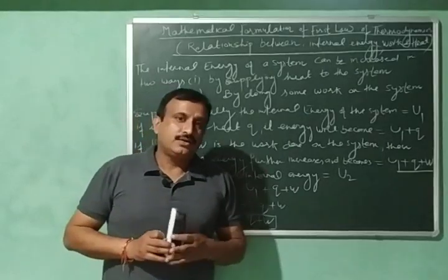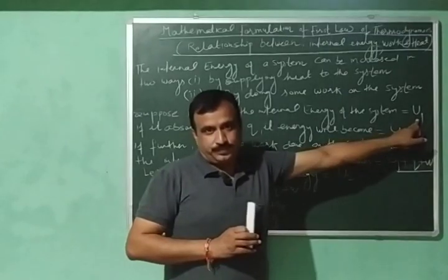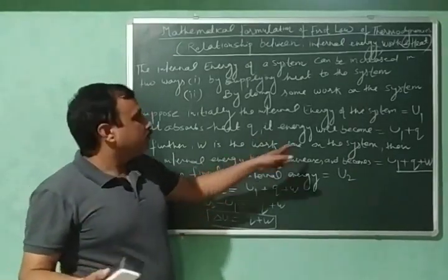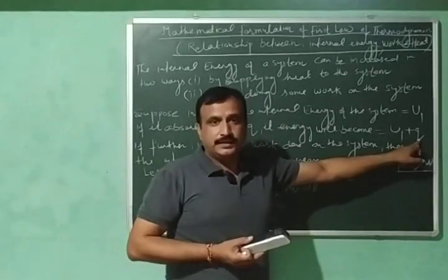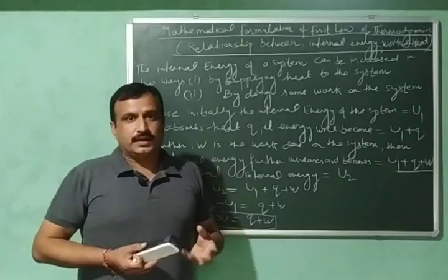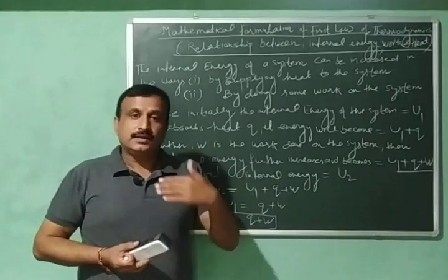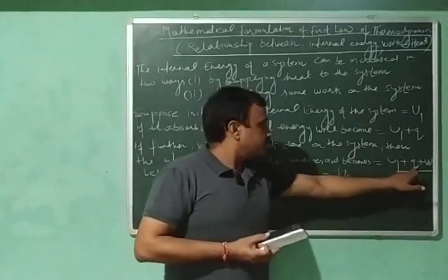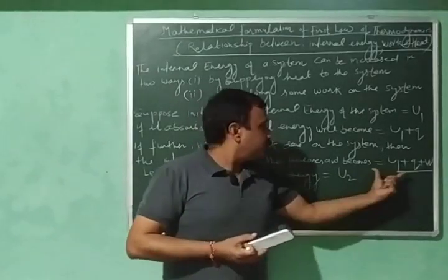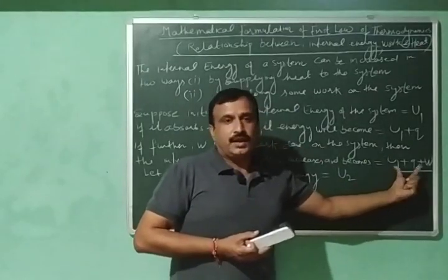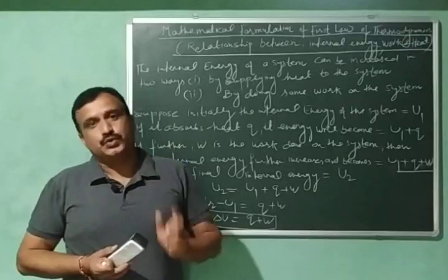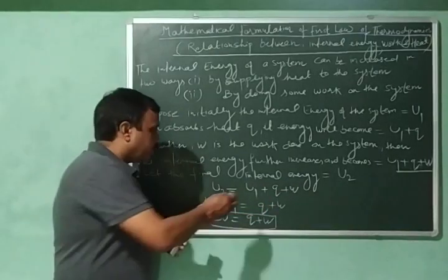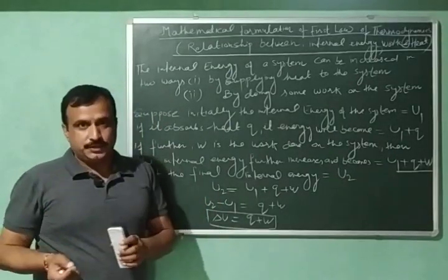Let us consider a system where initially its internal energy is equal to U1. If this system absorbs heat Q, then its internal energy will increase and it will become equal to U1 plus Q. And further if work W is done on the system, then the internal energy of the system will further increase and it will become equal to U1 plus Q plus W. This is the final internal energy of the system, denoted by U2. So U2 equals U1 plus Q plus W, where U1 is the initial internal energy and U2 is the final internal energy.